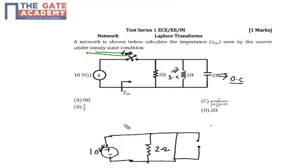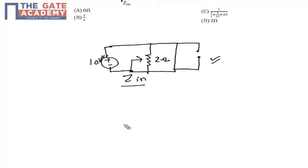So this is my effective circuit in steady state. If you can see this network, I need to calculate the Zin for this.